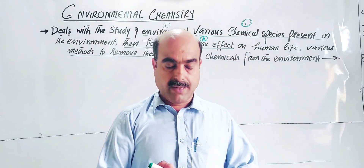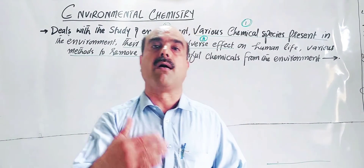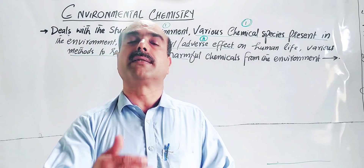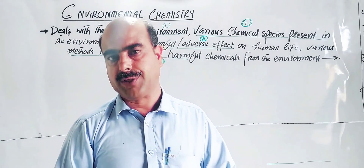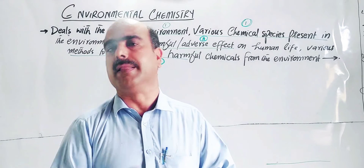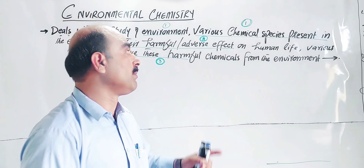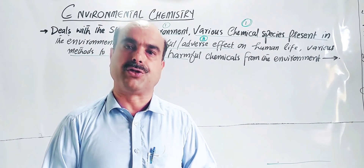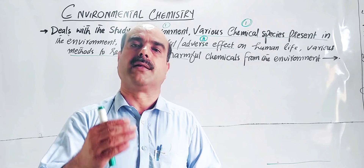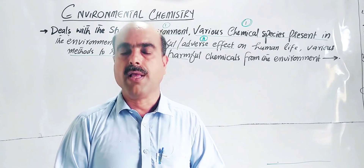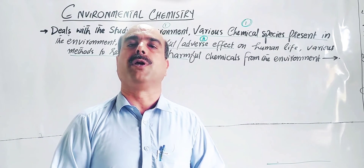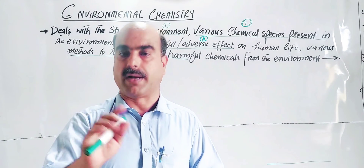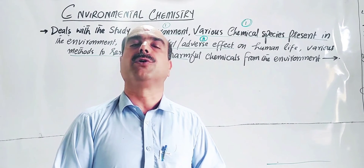Environmental chemistry also studies pollution and how to treat and protect our environment. We study the environment so that we do not pollute it further. The scope includes effects on plants, building materials, and aquatic life, and methods to study and protect the environment from chemical pollution.